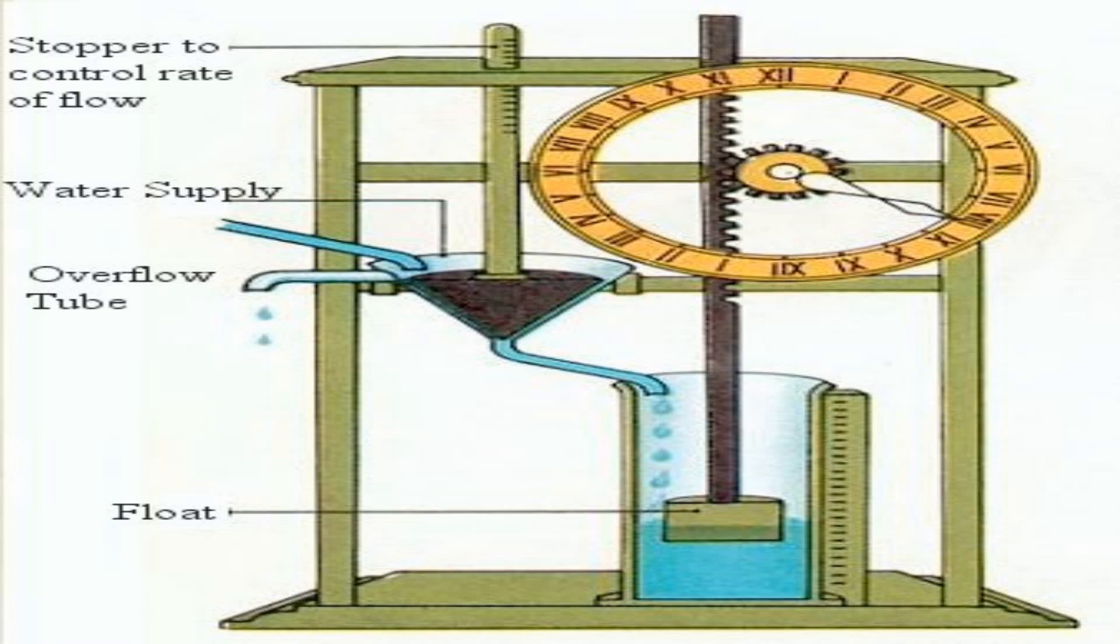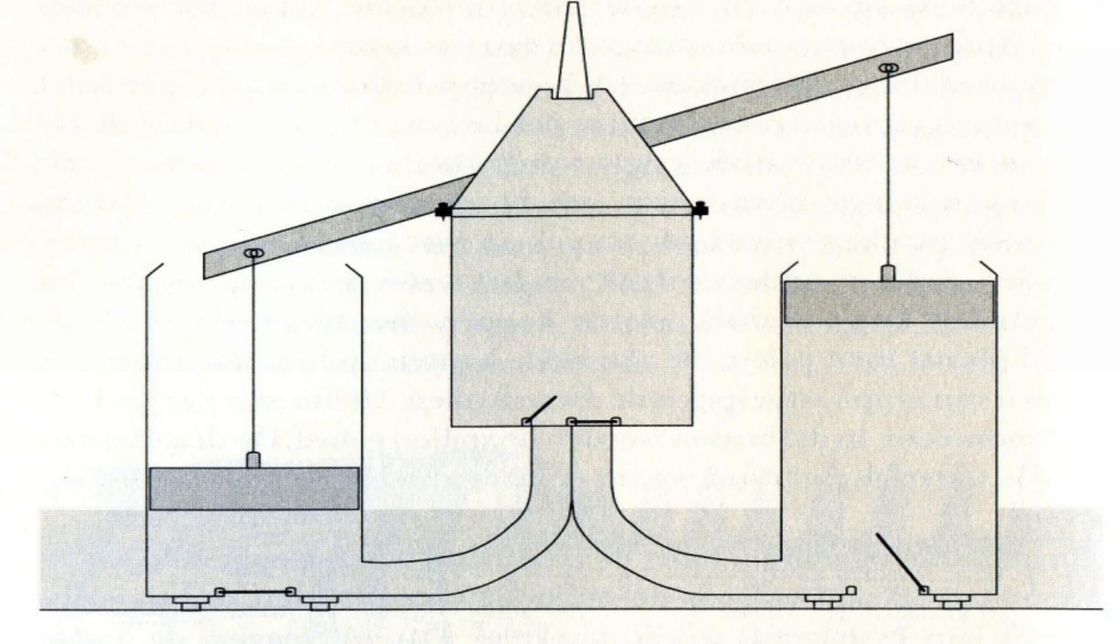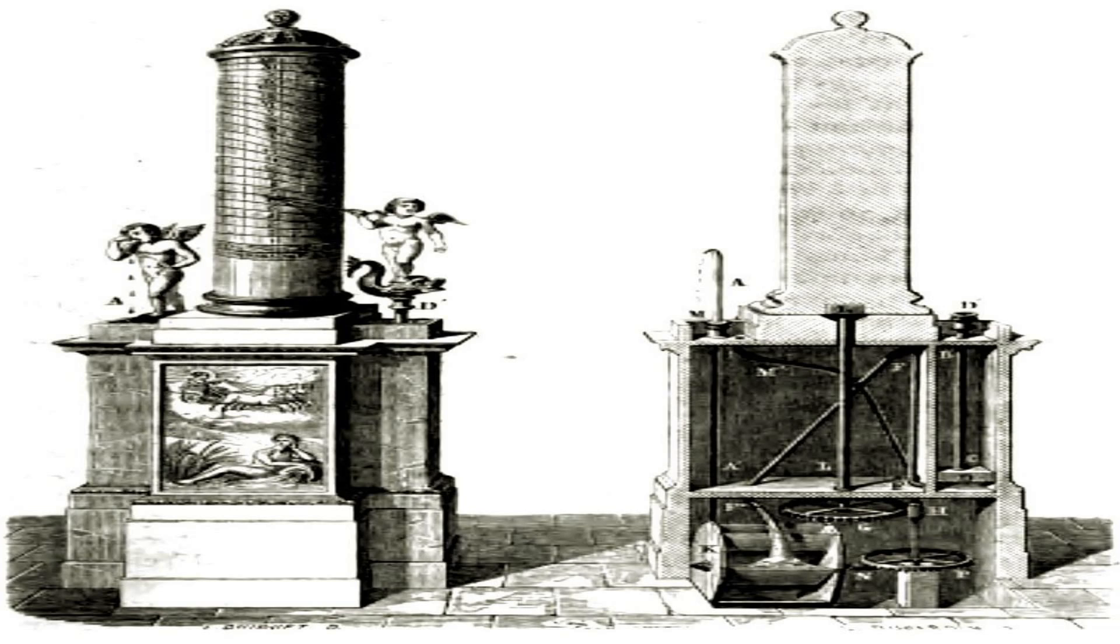What is a klepsidra? A klepsidra is a device that measures time by the flow of water. The word klepsidra comes from the Greek words kleptine, meaning to steal, and hydro, meaning water. The idea is that water is stolen from one container and transferred to another at a constant rate, indicating the passage of time.